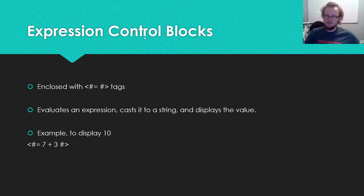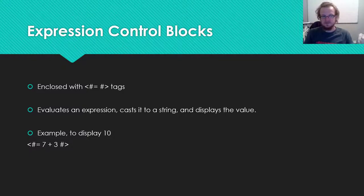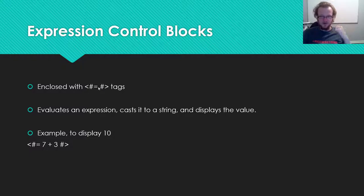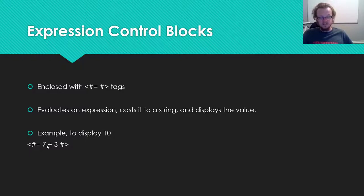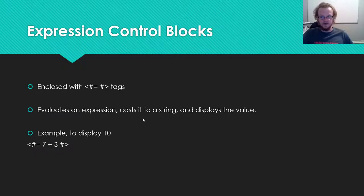Expression control blocks perform the same function as the double curly braces inside of JavaScript and HTML for Angular — they evaluate whatever expression is inside the tags, cast it to a string, and display that value. For example, if you want to put the value 10 inside your text file, you could use this simple expression. The C# engine will run the expression, simplify it to 10, cast it to a string, and display that value wherever you have this tag in your template.